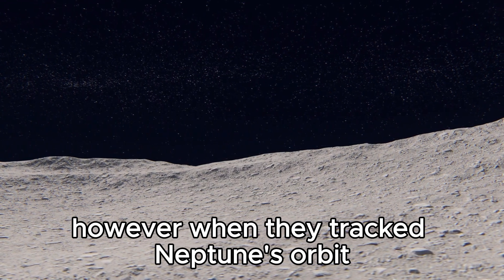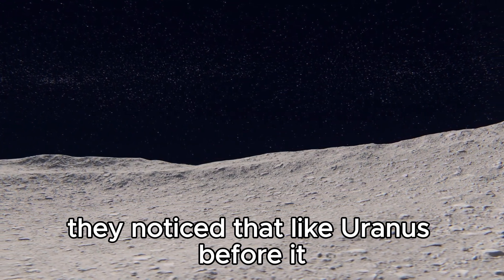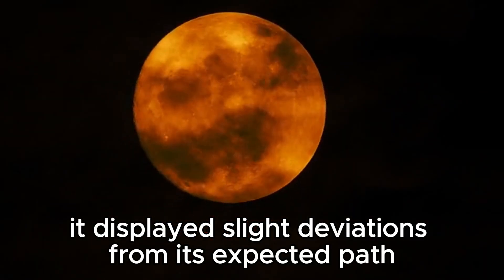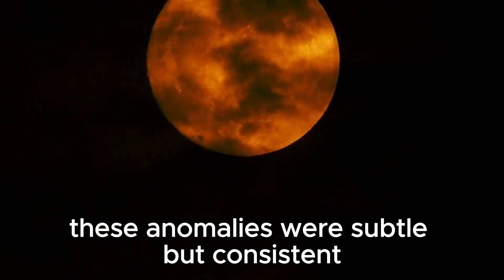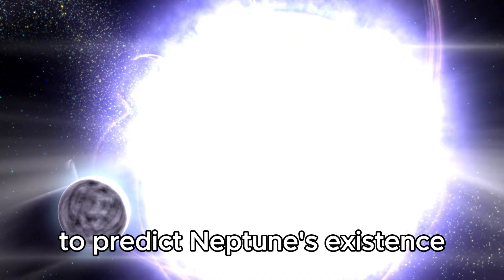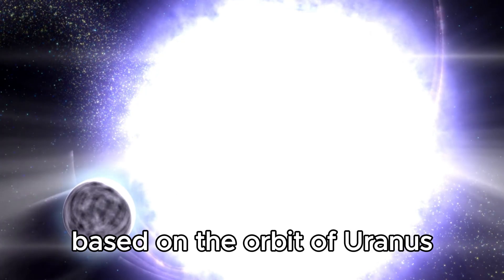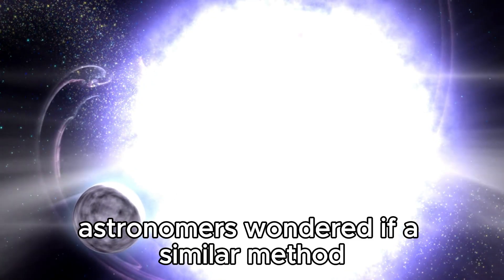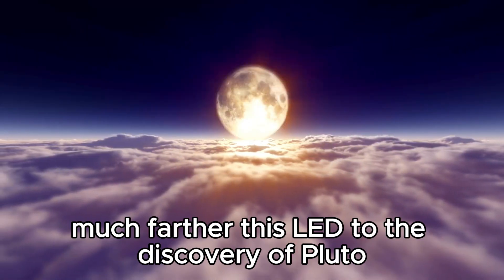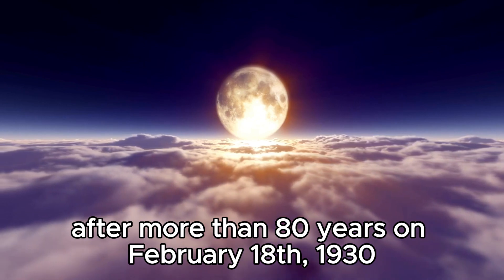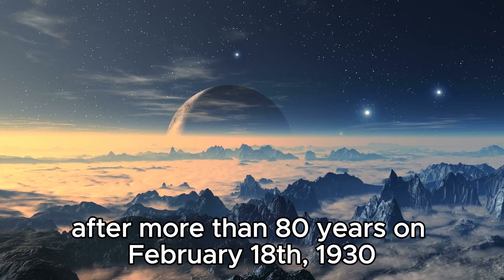when they tracked Neptune's orbit, they noticed that, like Uranus before it, it displayed slight deviations from its expected path. These anomalies were subtle but consistent. Given the success of tapping into gravitational forces to predict Neptune's existence based on the orbit of Uranus, astronomers wondered if a similar method could reveal yet another planet much farther. This led to the discovery of Pluto after more than 80 years, on February 18, 1930.